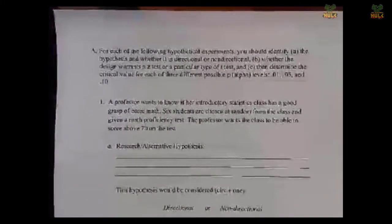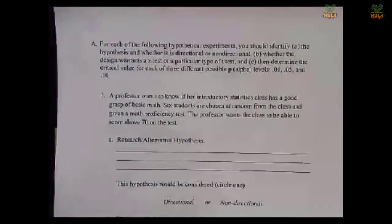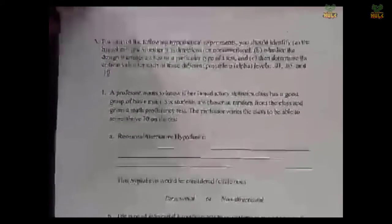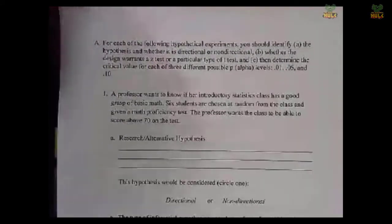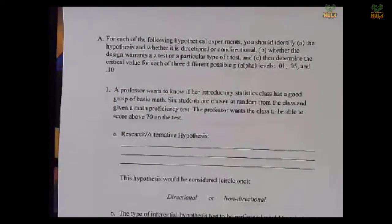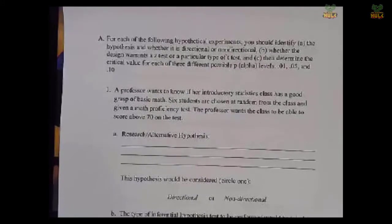What does it say? It says, for each of the following hypothetical experiments, you should identify the hypothesis and whether it is directional or non-directional, whether the design warrants a z-test or a particular type of t-test, and then determine the critical value for each of three different possible p or alpha levels: .01, .05, and .10.